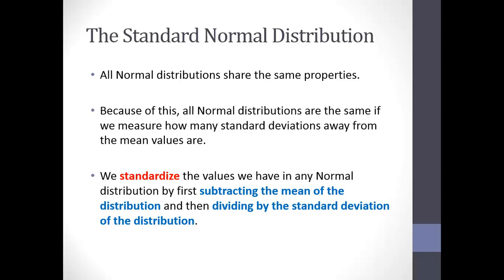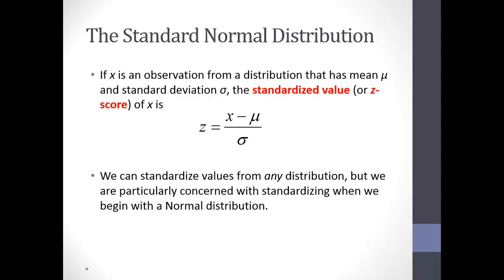All normal distributions have the same properties. Because of this, if we simply measure how many standard deviations away from the mean we are, we can use similar tricks. We're going to standardize the values we have in any normal distribution. We can standardize by first subtracting off the mean of the distribution, and then dividing by the standard deviation. That's called standardizing the values. If x is an observation from a distribution with mean μ and standard deviation σ, the standardized value is z = (x − μ) / σ.